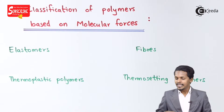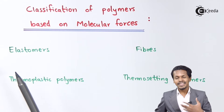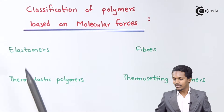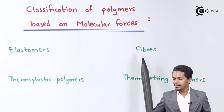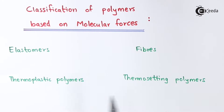Based on the molecular forces, polymers are classified into four types: elastomers, fibers, thermoplastic polymers, and thermosetting polymers.